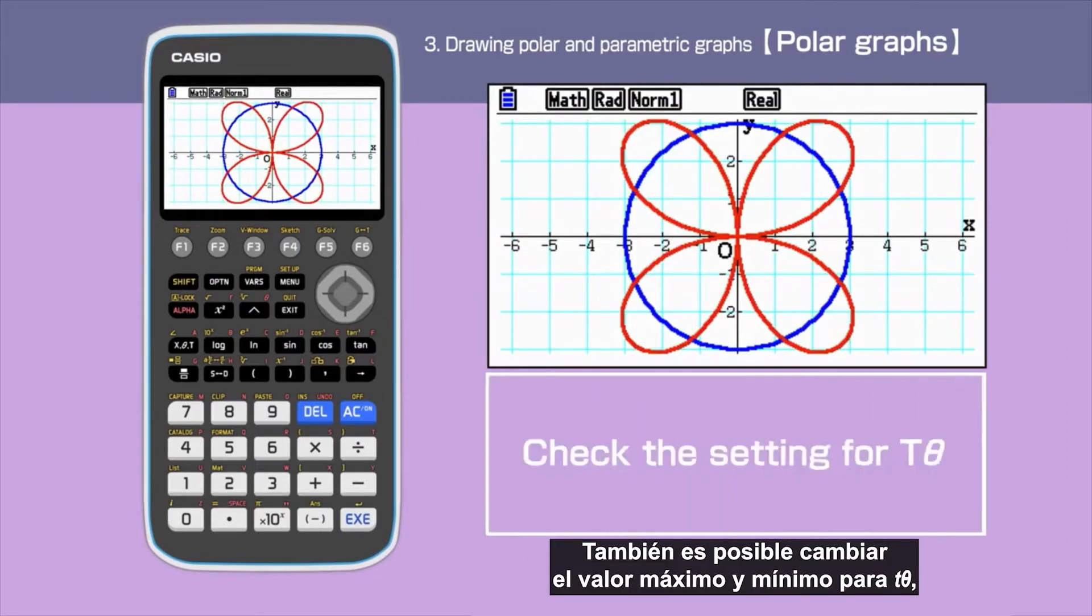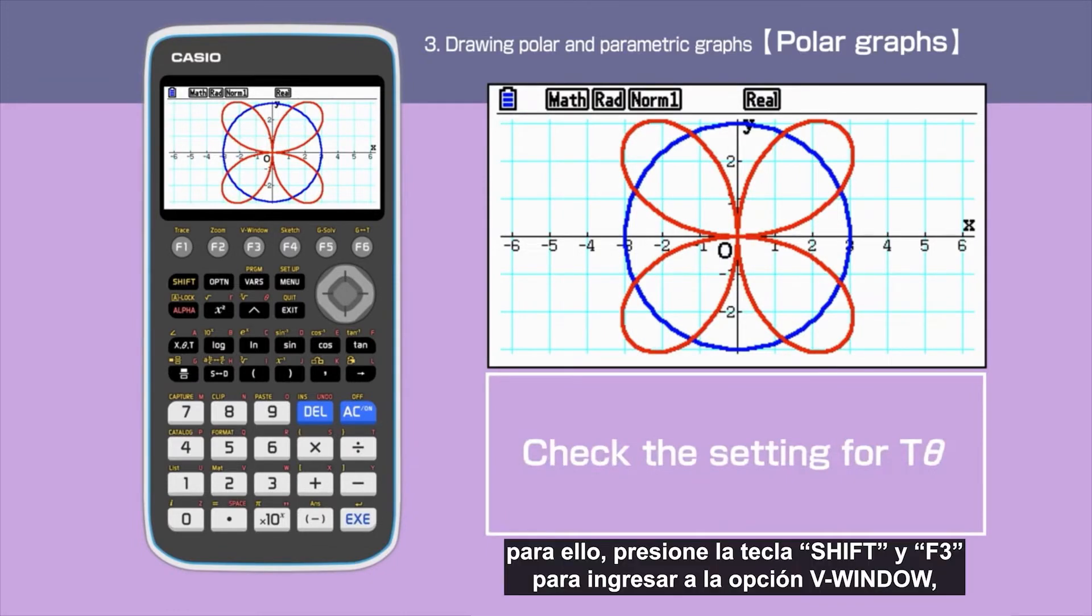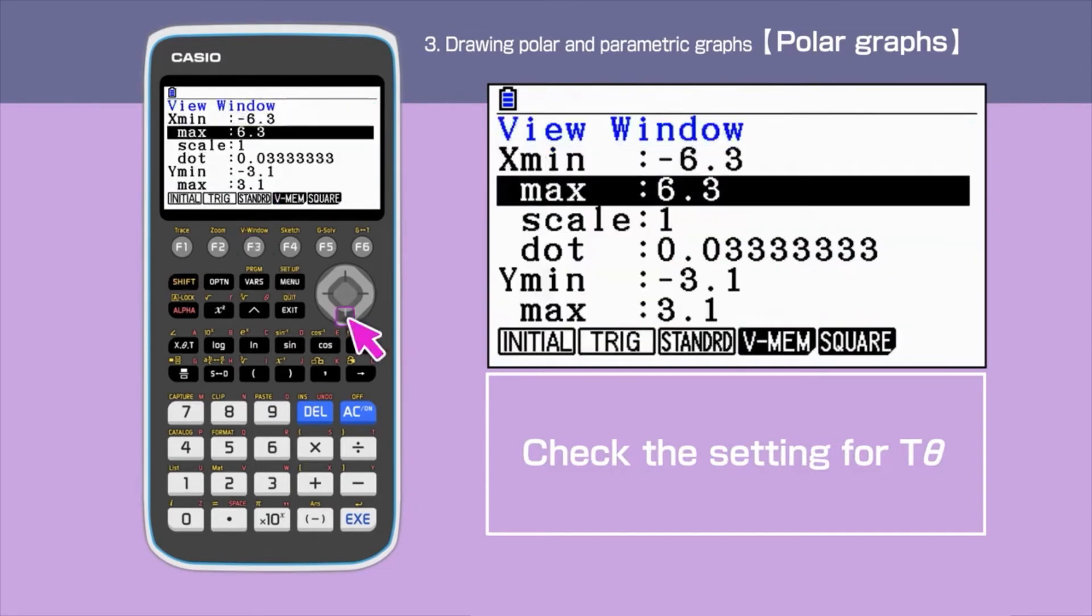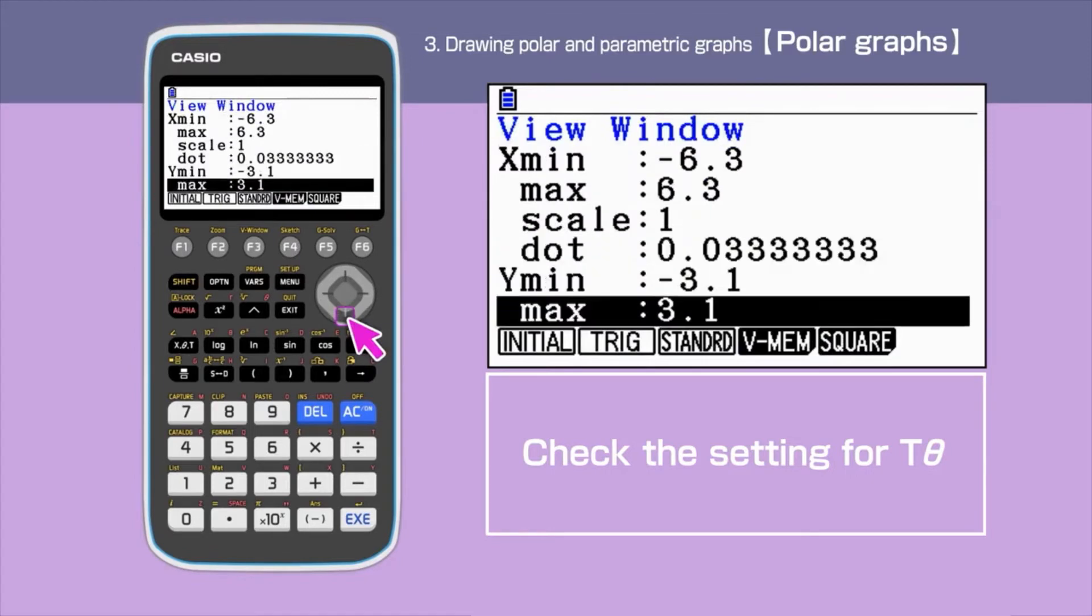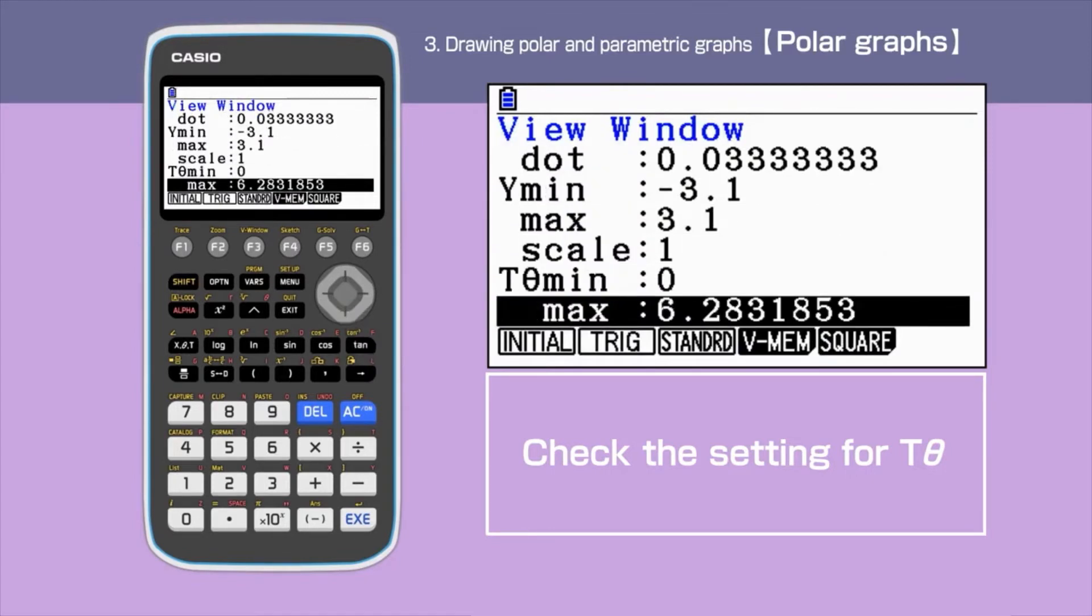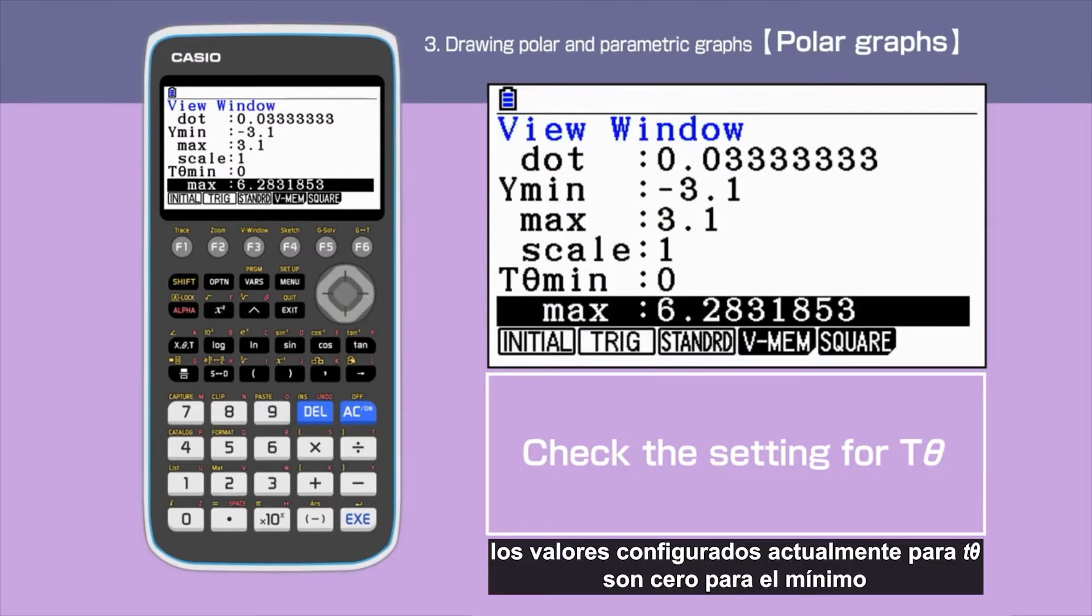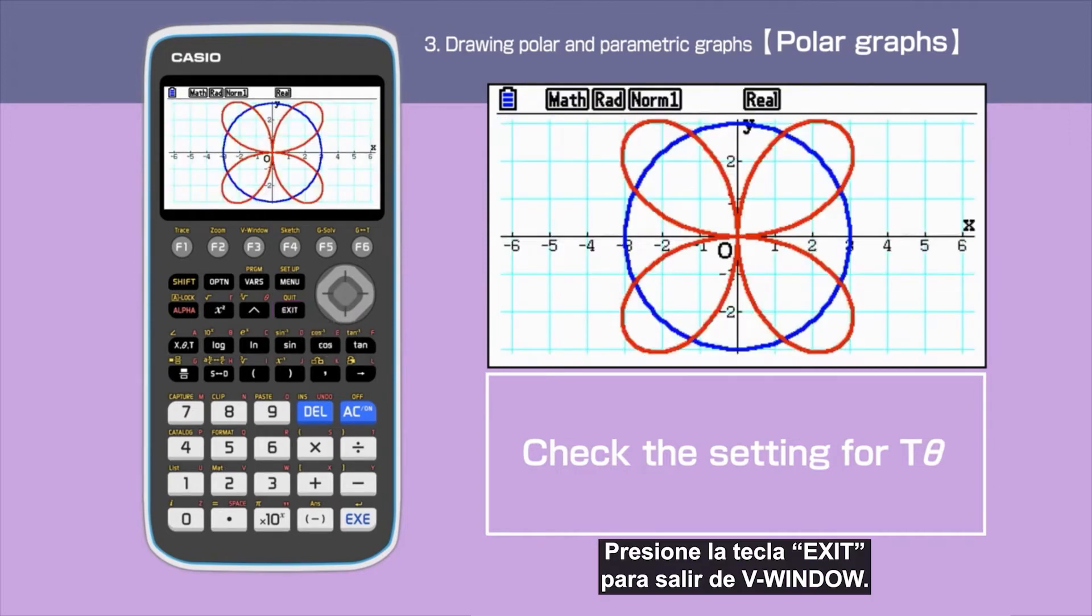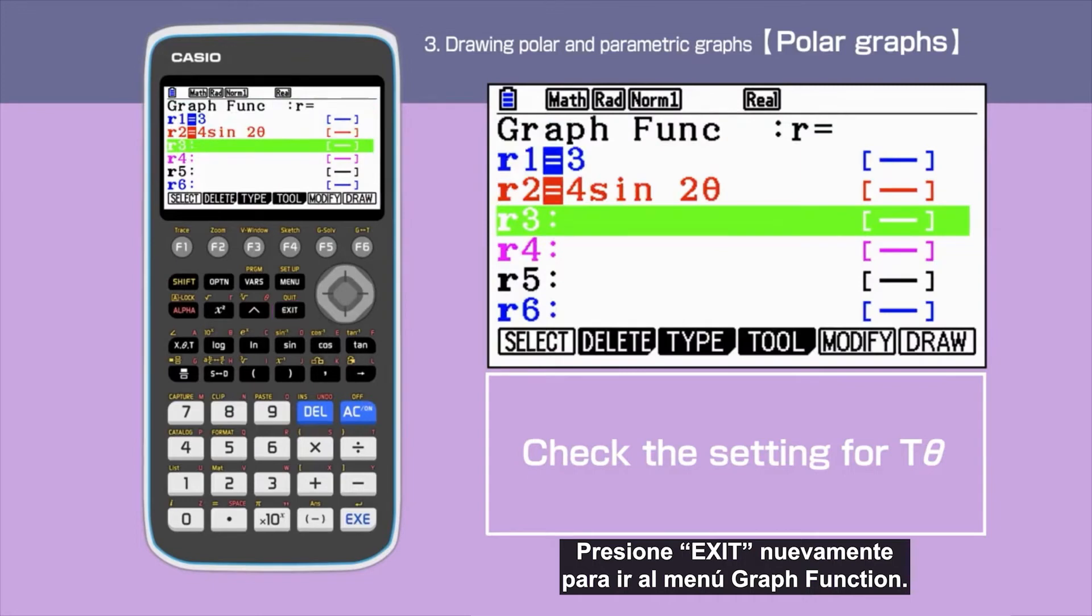You can also change the maximum and minimum values of Tθ. For this, press Shift F3 to select view window. The current setting for Tθ is 0 for minimum and 2π for maximum. Press Exit to close view window. Press Exit again to go to the graph function screen.